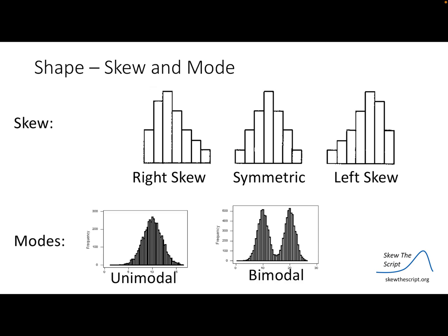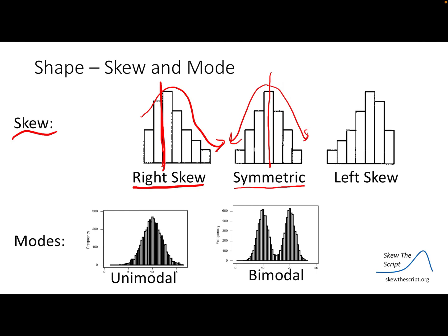To start with shape, there are a couple of ways you can describe this. The first is our skew. We'd have a right skew where our center is here and it goes up and then down to the right. A symmetric graph is going to have an even distribution on both sides of the center. A left skew would have the center here and then the data falls to the left. The mode represents where the highest peak of the data is. Unimodal has just one peak, distributed on both sides. Bimodal has two peaks — it goes up and down, up and down again.